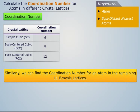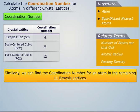Similarly, we can find the coordination number for an atom in the remaining eleven Bravais lattices.